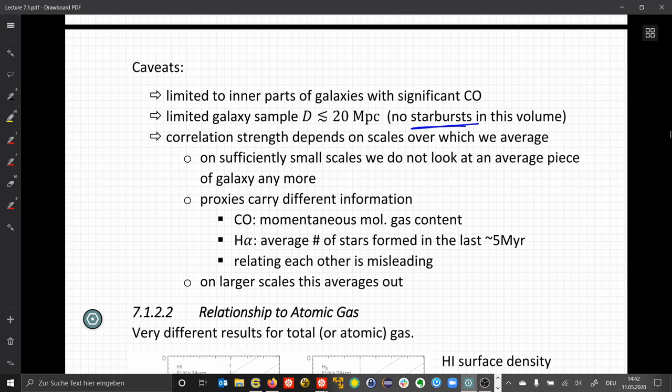While the H-alpha emission corresponds to the average number of stars that has been formed in the last five megayears. So we are already five megayears after the actual star formation from gas, while the CO might be the gas that turns into stars in the near future. Directly relating each other carries the danger of some misinterpretation. However, on larger scales, this all averages out.